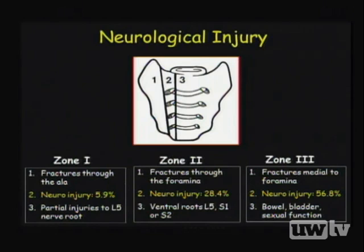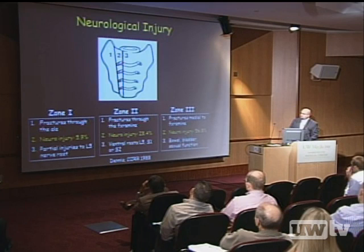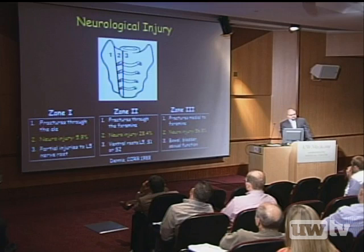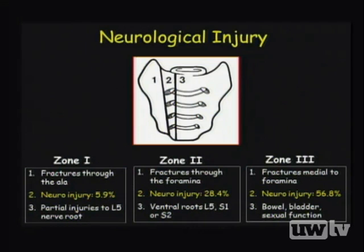Denis defined three zones of the sacrum based on 236 patients with neurological injury and 29 cadaver studies. Zone 1 fractures occur lateral to the foramina, zone 2 through the foramina, and zone 3 medial to the foramina or as transverse sacral fractures. Zone 3 injuries have the highest neurological injury rate at approximately 56.8%, with 80% of those patients experiencing bowel, bladder, and sexual dysfunction.